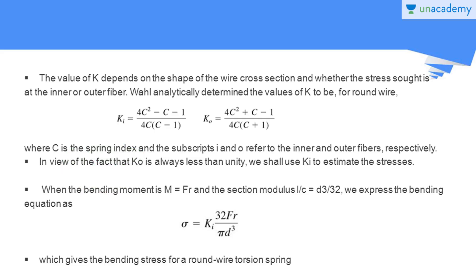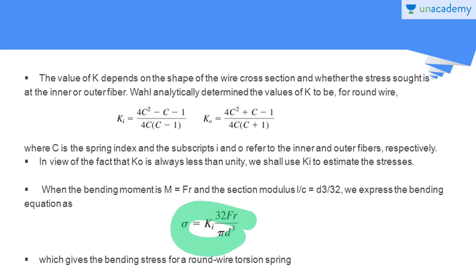Since ko is always less than unity, we should use ki to estimate the stresses — specifically the residual bending stresses induced while manufacturing the helical coil torsion spring. When the bending moment is given by M equals Fr, and the section modulus i/c equals d³/32, we substitute these values into the bending equation to get sigma equals ki times 32Fr divided by pi times d³. This is the bending stress developed in the coils of the helical coil torsion springs, giving the bending stress for a round wire torsion spring. This stress is the residual stress given to the spring wire while manufacturing. Remember this formula — it is very important for calculating the bending stresses developed in helical coil torsion springs.